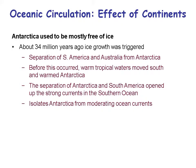Antarctica is another interesting story. Thirty-four million years ago, ice growth was triggered in Antarctica. Before that, when South America and Australia were still connected to Antarctica, warm tropical waters moved south and kept Antarctica warmer. When those continents separated through plate tectonics, they opened up strong circumpolar currents in the Southern Ocean, isolating Antarctica from moderating ocean currents. Antarctica is very cold now, but before 34 million years ago, even at the South Pole, it was not so cold.